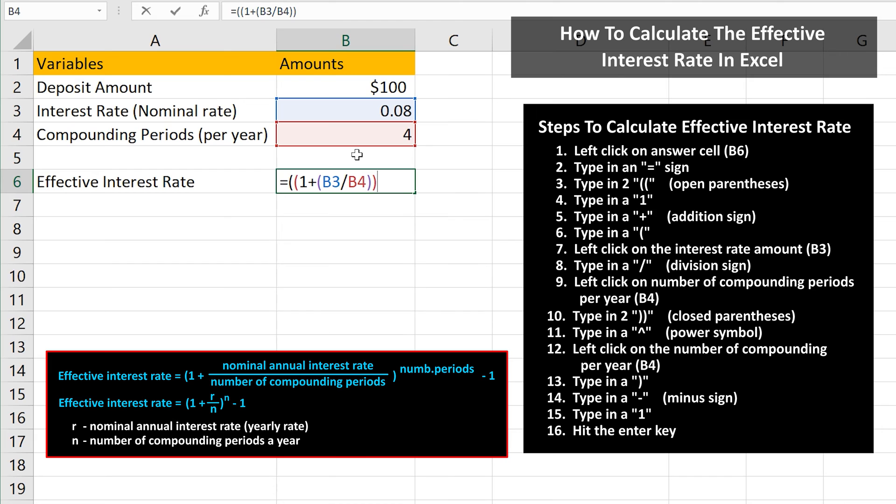Next, we need to type in a to-the-power symbol, called the caret symbol in Excel, which is shift 6 on the keyboard. Now, we need to left-click again on the number of compounding periods per year, cell B4. From here, we type in a close parentheses, followed by a minus sign, then type in a 1.